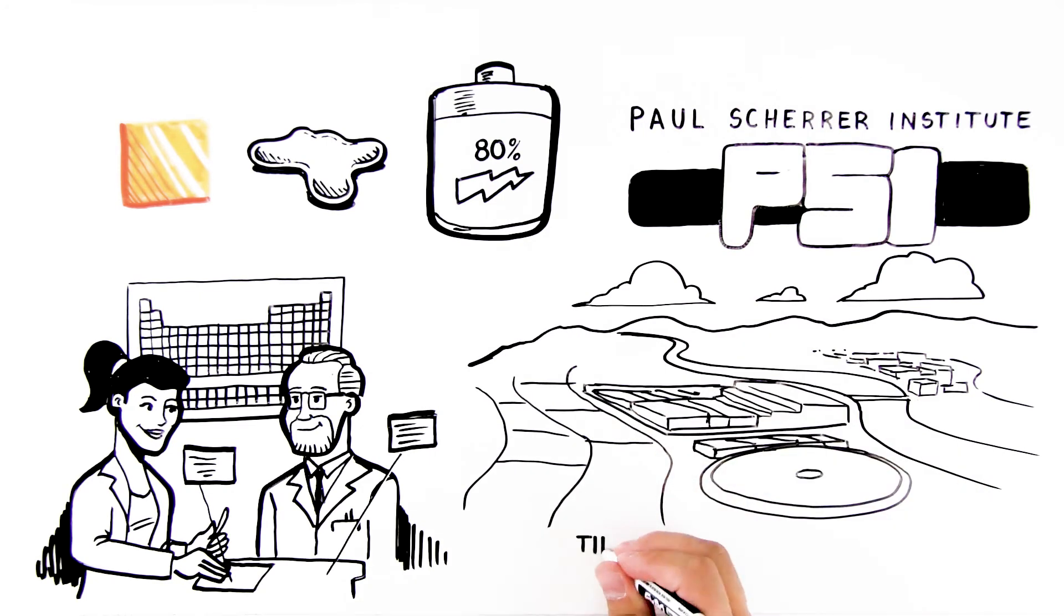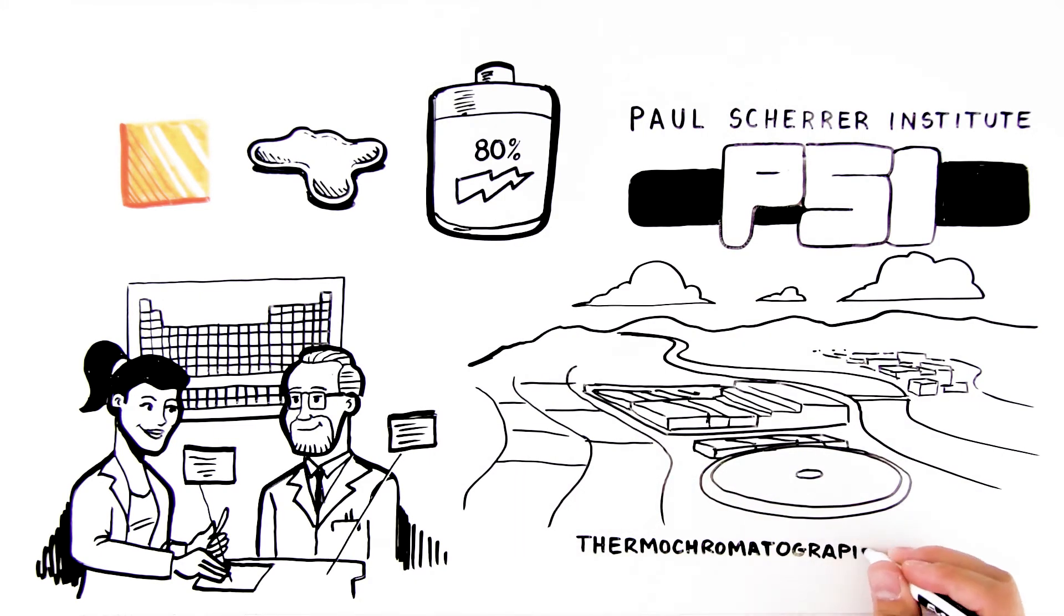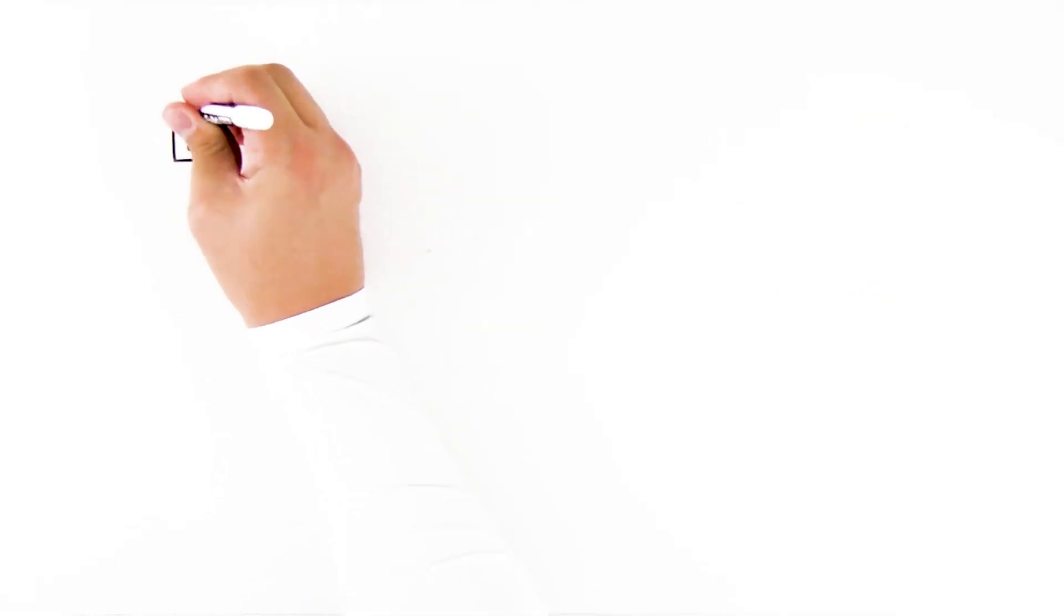One such experiment is the gas phase chemical characterization using adsorption thermochromatography. Two examples of super-heavy elements that have been chemically identified with this technique are Copernicium and Flerovium.